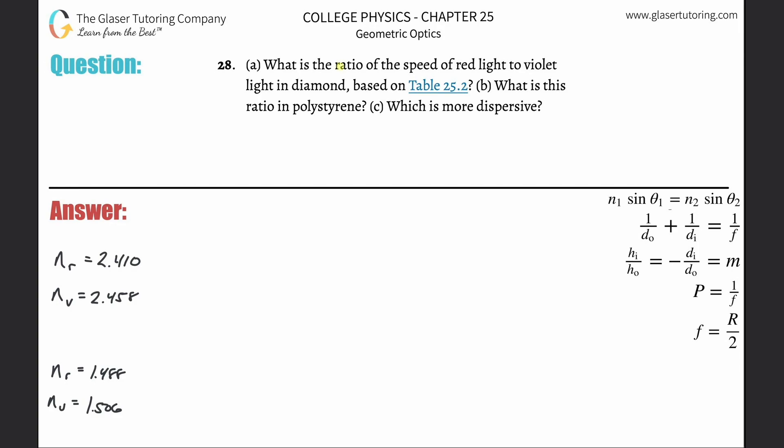Number 28, letter A. What is the ratio of the speed of red light to violet light in diamond based on the table?